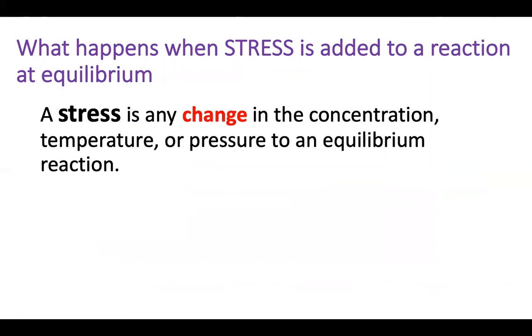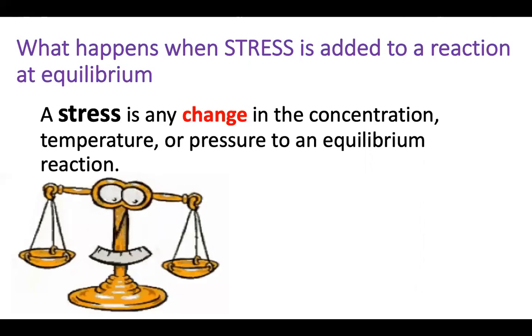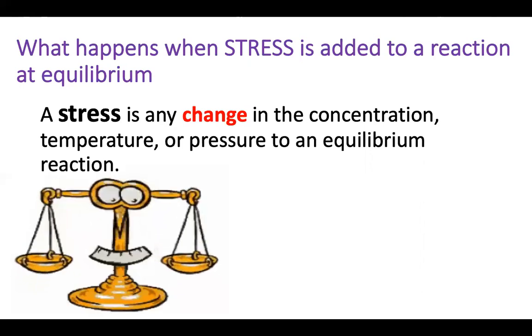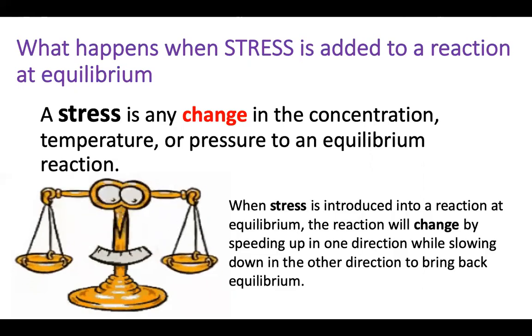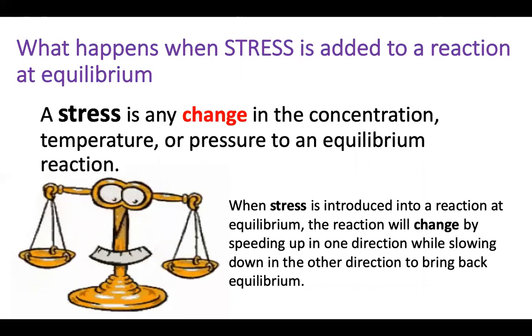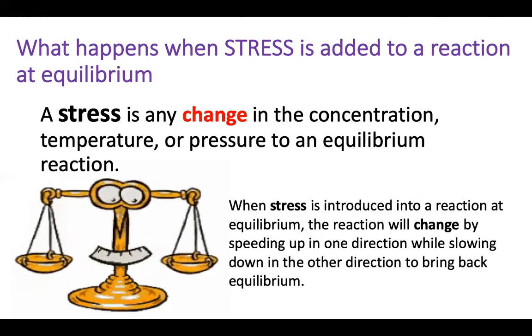We're going to learn about what happens when stress is added to a reaction at its equilibrium. A stress is defined as any change in concentration, temperature, or pressure to an equilibrium reaction. You can look at the scales here. One side or the other is experiencing stress, so we're actually having a little bit of that equilibrium being passed back and forth. When stress is introduced into a reaction at equilibrium, the reaction will change by speeding up in one direction while it's slowing down in the other direction, and it's going to bring it back to equilibrium. With one way that it flows, it will always be coming back the other way.